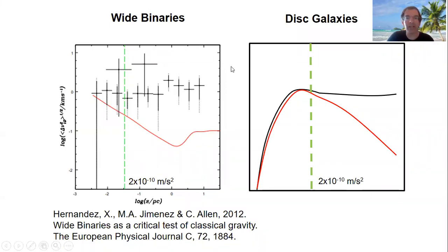So on the left, there is some data taken from a paper by Hernandez et al in 2012. The x-axis shows the separation of the stars, and the y-axis shows the orbital speed of them. Now, according to Newton or general relativity, we should see something like the red curve.